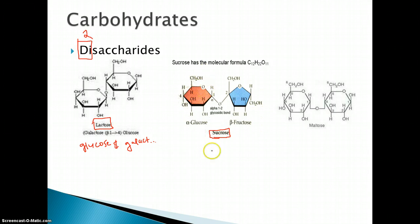And here we have maltose, which is found in alcoholic beverages. And it is glucose plus another glucose. But the point here is that disaccharides are slightly larger than monosaccharides, and they're two monosaccharides bonded together.